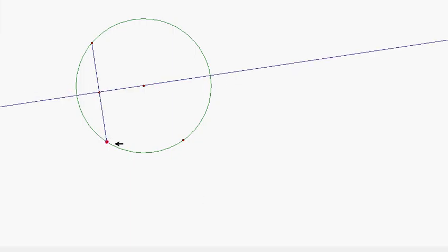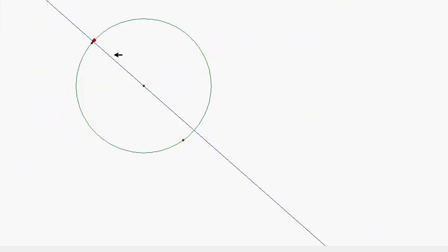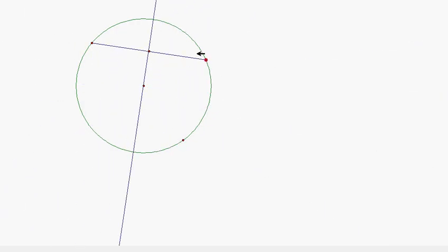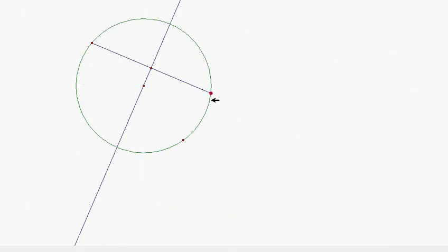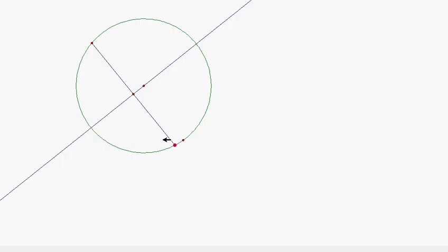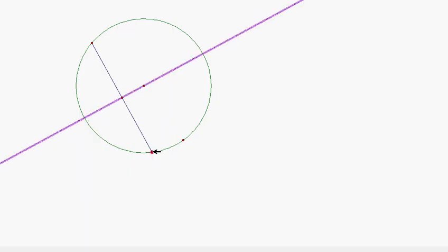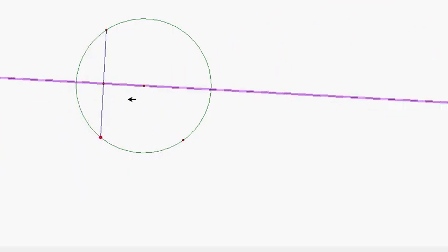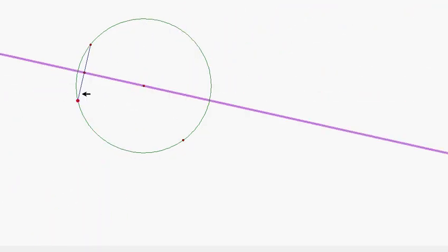Now as I drag this around, hopefully you're starting to see something that appears to be always true. And that is that this perpendicular bisector, this highlighted segment here, is always going through the center. And that's going to be true for any chord here and any perpendicular bisector of any chord.